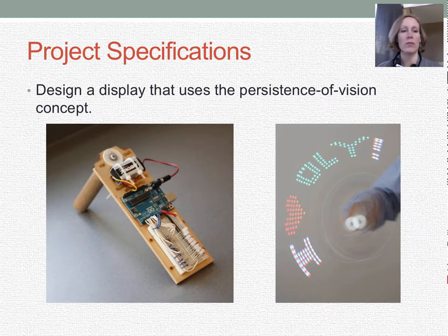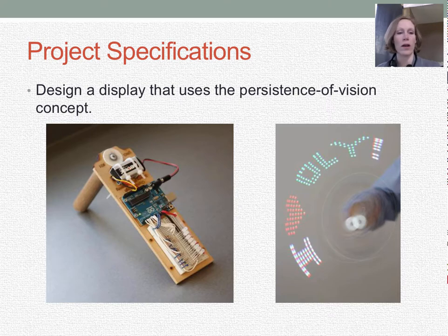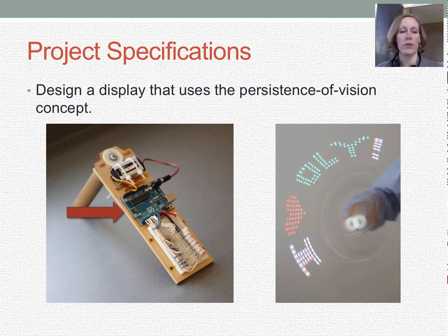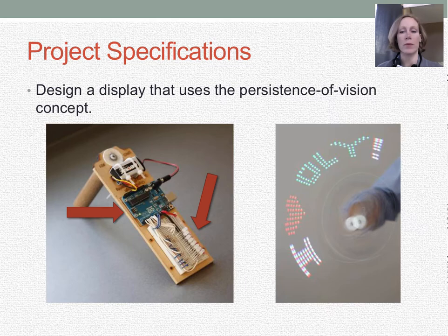You're going to mount your entire project onto a board in order to rotate the display. Your kit for this project, with all the materials you'll need, will be given to you. We're going to use an Arduino to control the lights — that's our microcontroller. This is showing the breadboard with all eight LEDs and the wiring to and from the Arduino board.